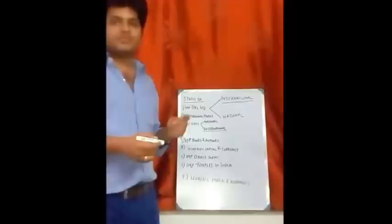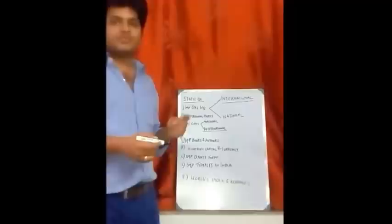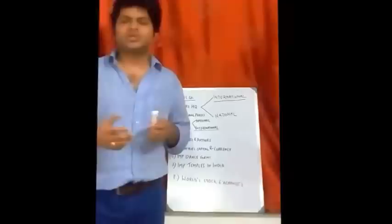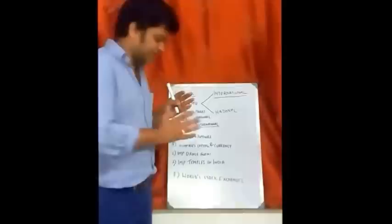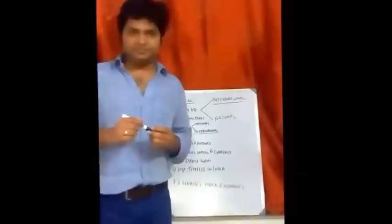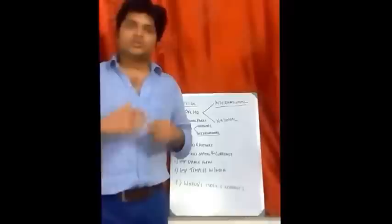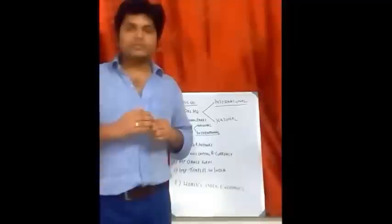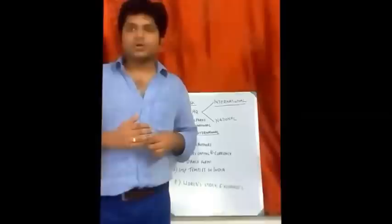Next are important dance forms, which have appeared in 2-3 exams. For example, which state does Bihu dance belong to? This type of question comes from a standard list found in Lucent General Knowledge. Also, important temples in India — this is a historical concept covering important national-significance temples, and you have to read about them by state and district.